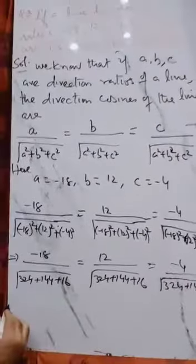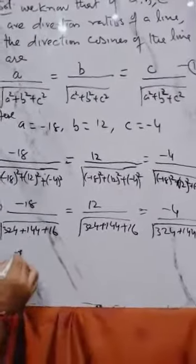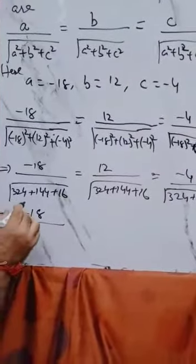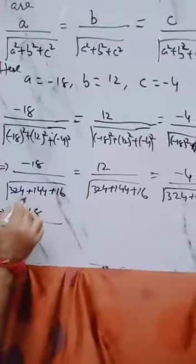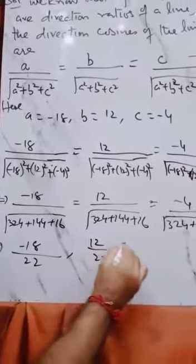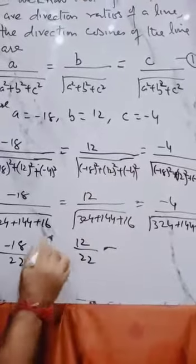Now minus 18 upon, if we total this we get 484, the root will be 22. 12 upon 22, and minus 4 upon 22.